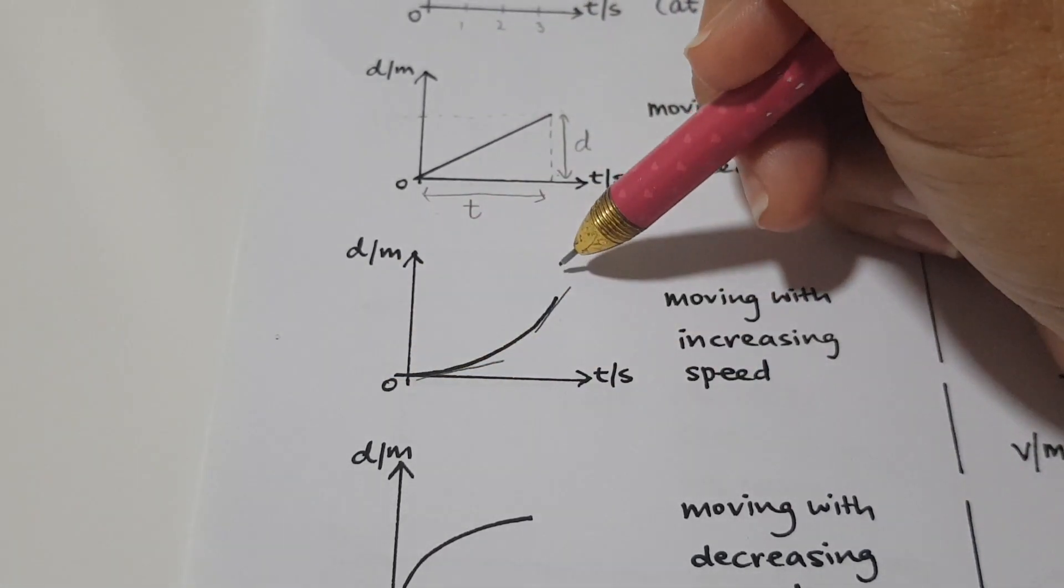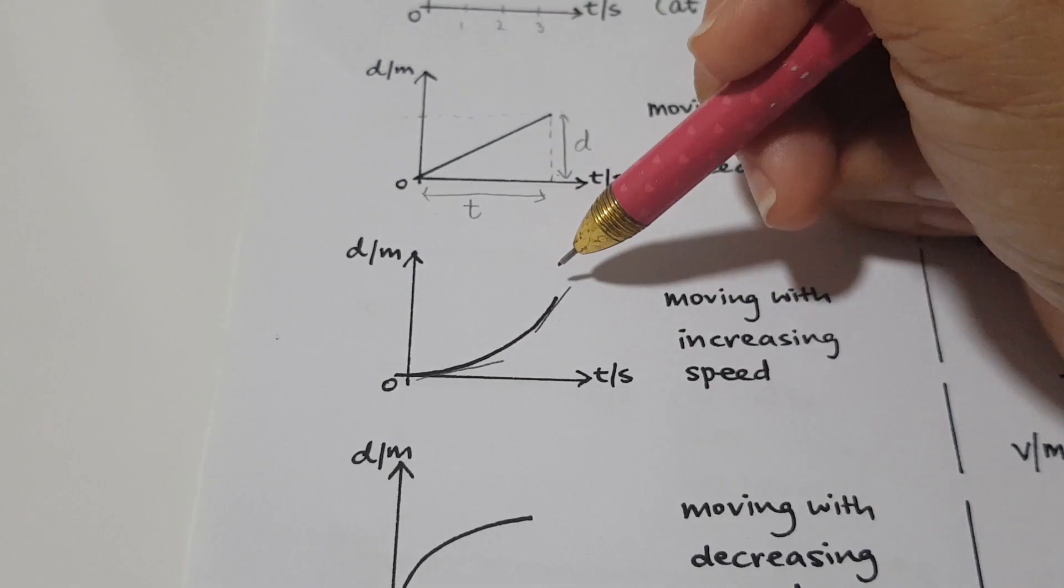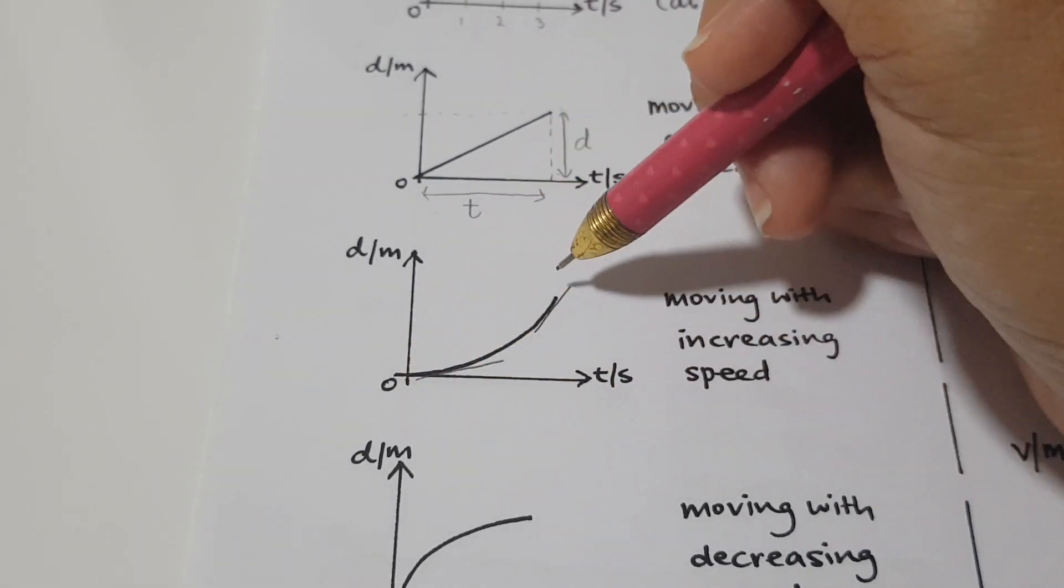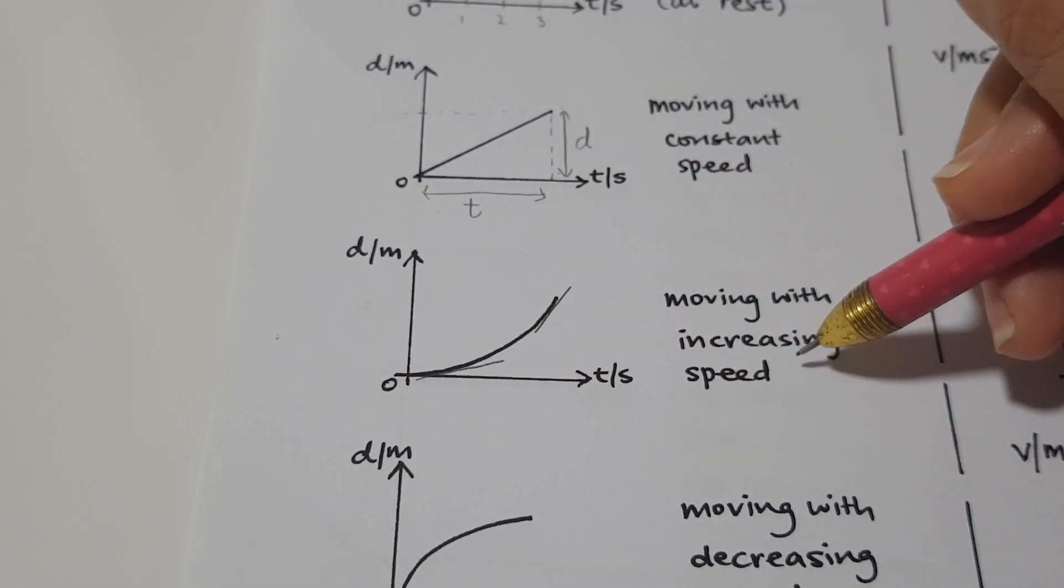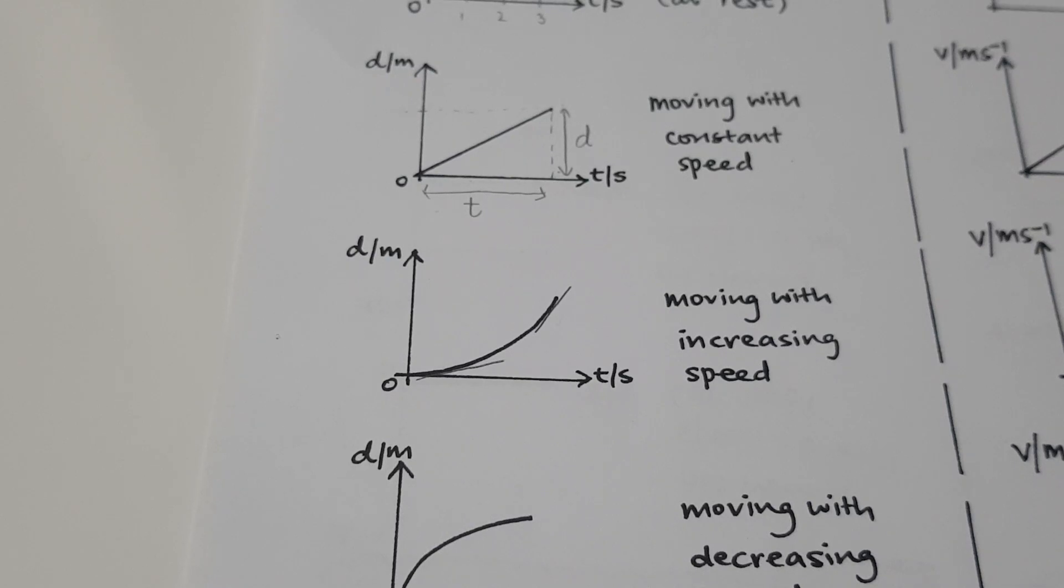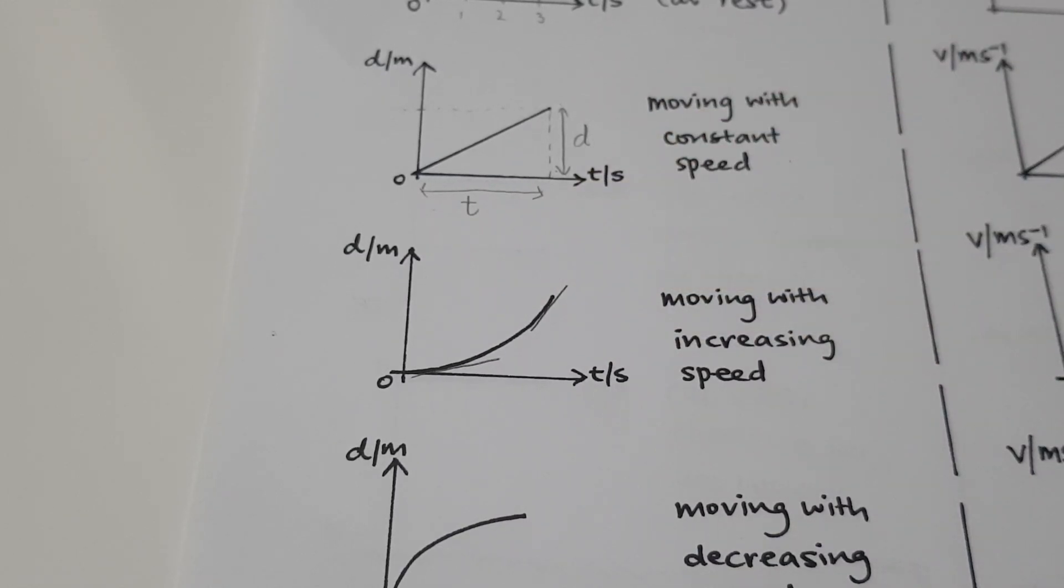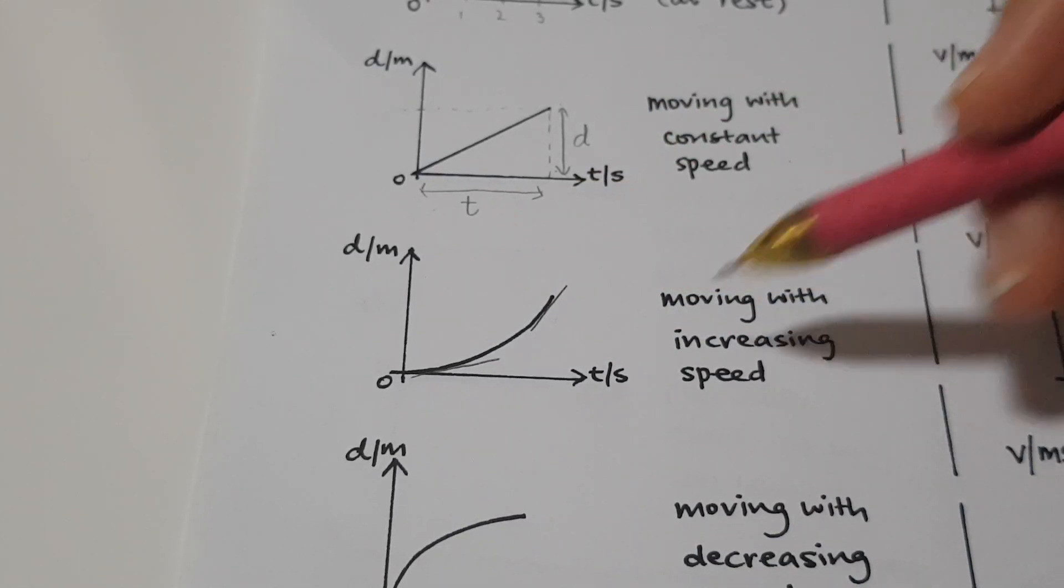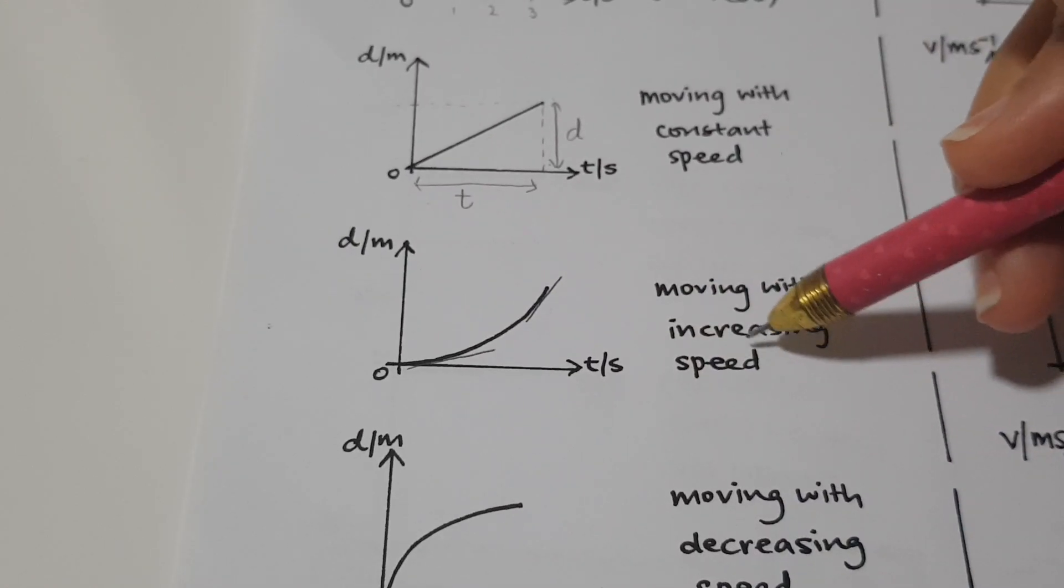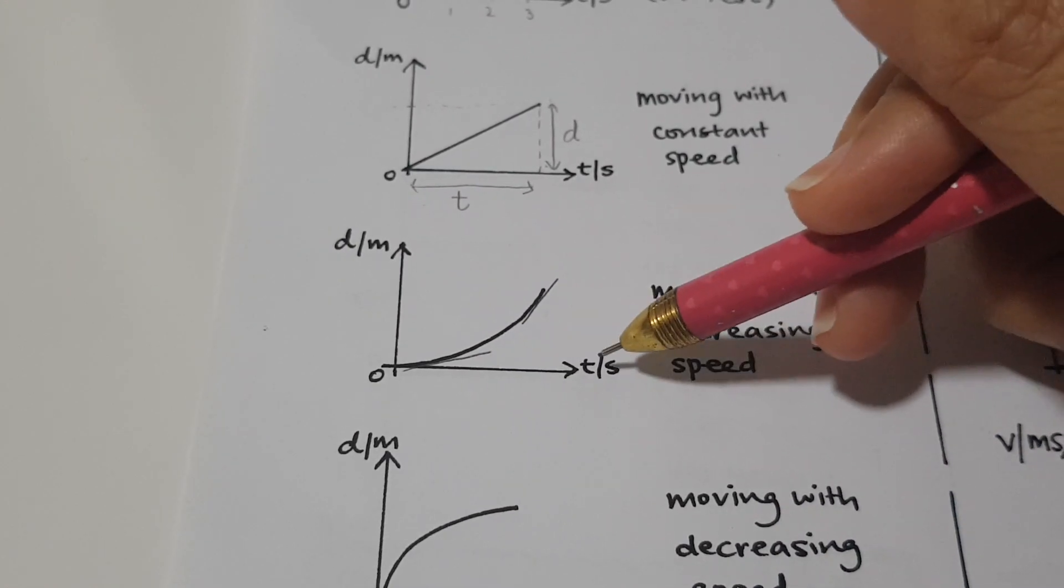So from gentle to steep, the gradient is increasing. With increasing gradient, it is actually moving with increasing speed. So if you see a curve with increasing gradient, it means that it's moving not with constant speed, but the speed is changing and is increasing over time.